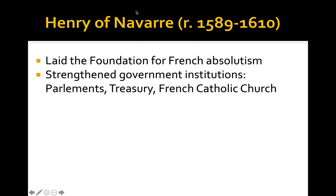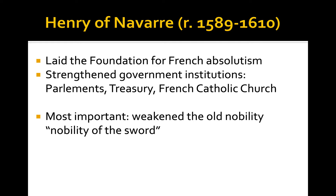The development of French absolutism really starts with Henry of Navarre, or Henry IV, whom we discussed in Chapter 4 during the Wars of Religion. He was the first Bourbon monarch, came out victorious in the French wars of religion, converted from Protestantism to Catholicism — 'Paris is worth a mass' — and settled things with the Edict of Nantes. He also strengthened government institutions and the monarch's control over the judiciary, the treasury, and the French Catholic Church, and continued the drive of taking power away from the nobility.